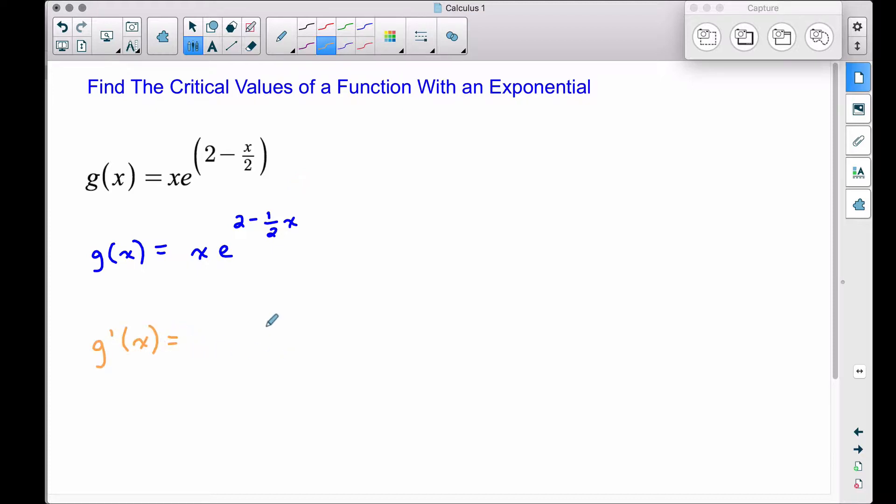Now to find g prime of x, we will have to use the product rule because we have x, that's a function, times this e to this power, that's our other function.